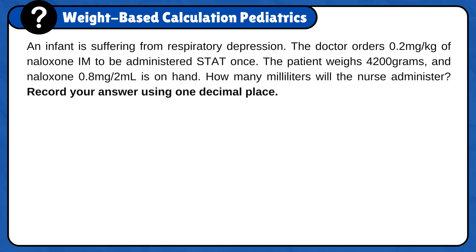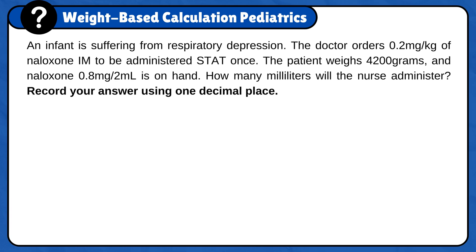An infant is suffering from respiratory depression. The doctor orders 0.2 mg per kg of Naloxone IM to be administered STAT once. The patient weighs 4,200 g and Naloxone 0.8 mg per 2 ml is on hand. How many ml will the nurse administer? Record your answer using one decimal place.